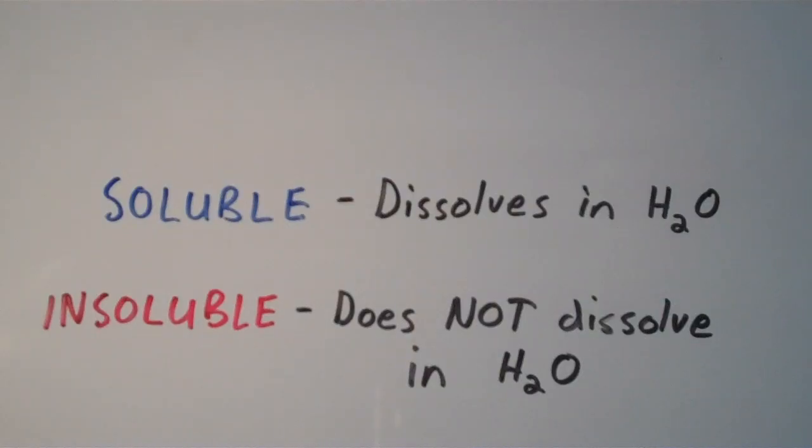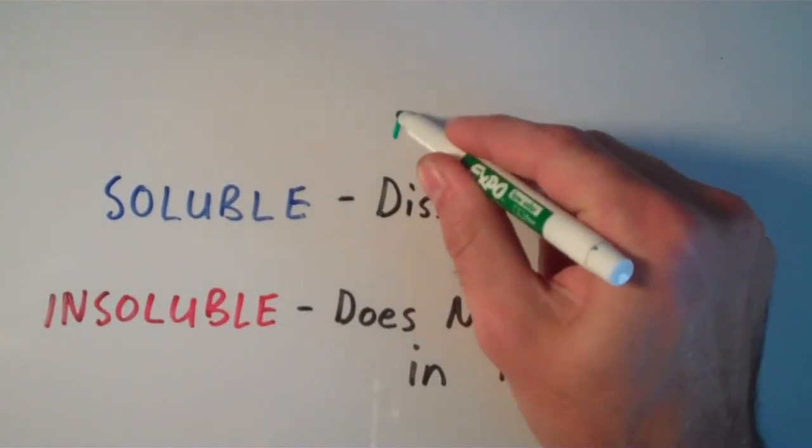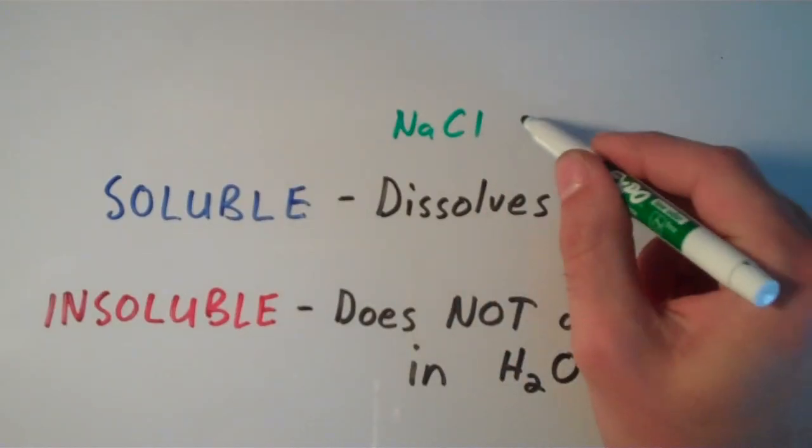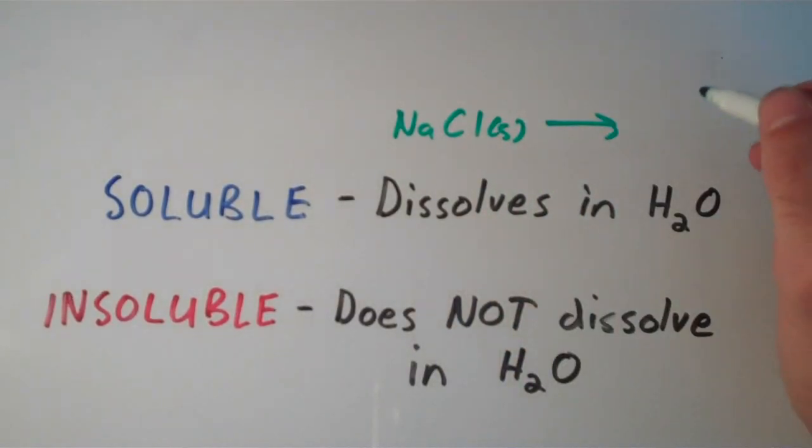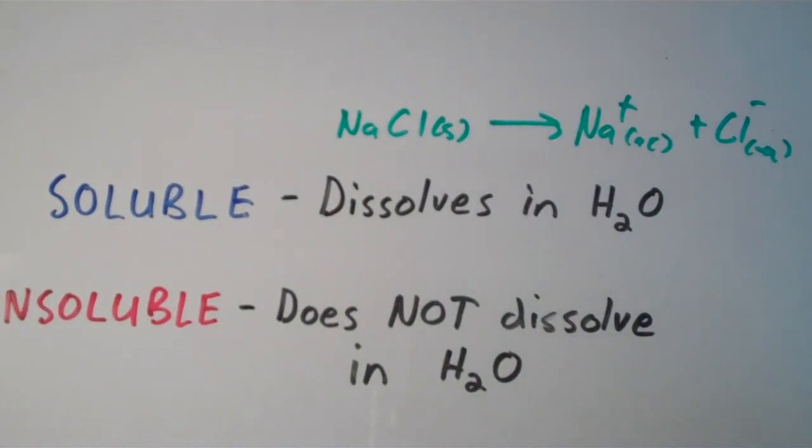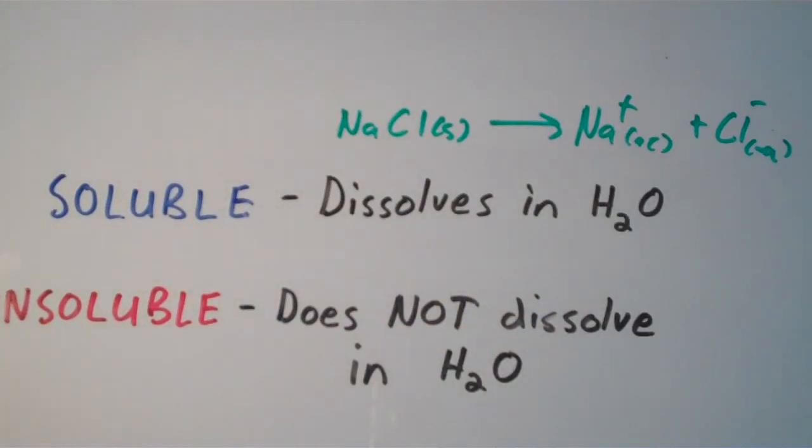If I have a soluble ionic compound such as sodium chloride, for instance, and I dissolve it in water, then I'll get sodium ion which is aqueous and chloride ion which is also aqueous. This is what the equation looks like for all soluble compounds.